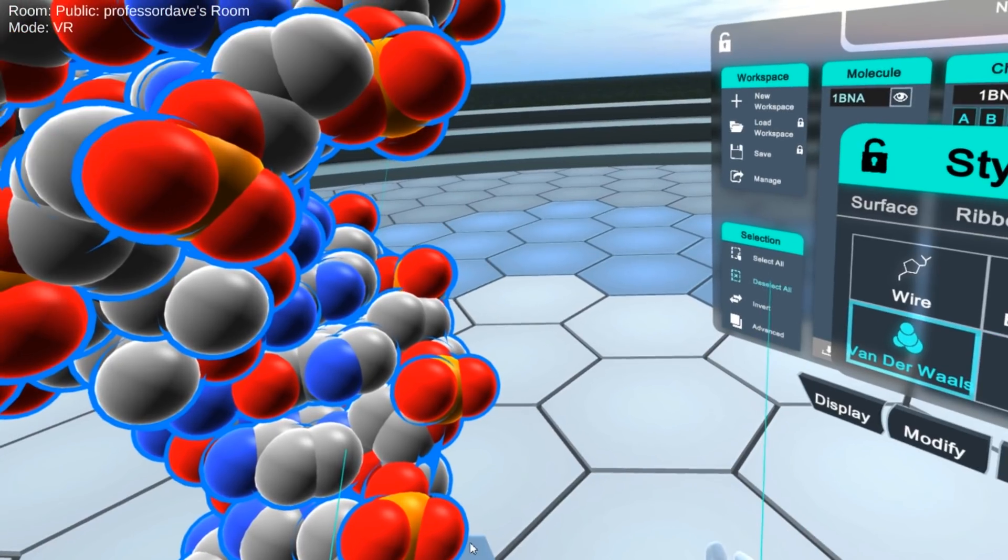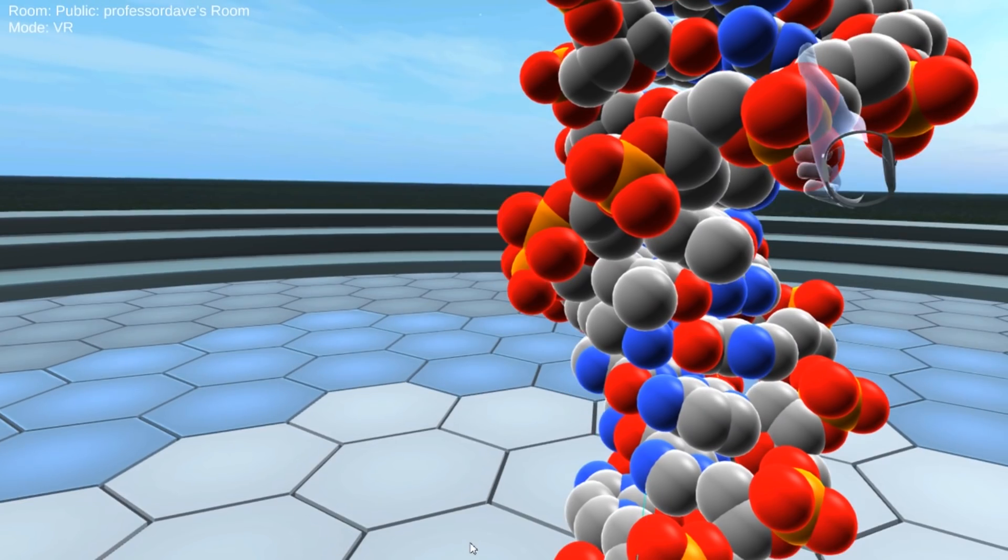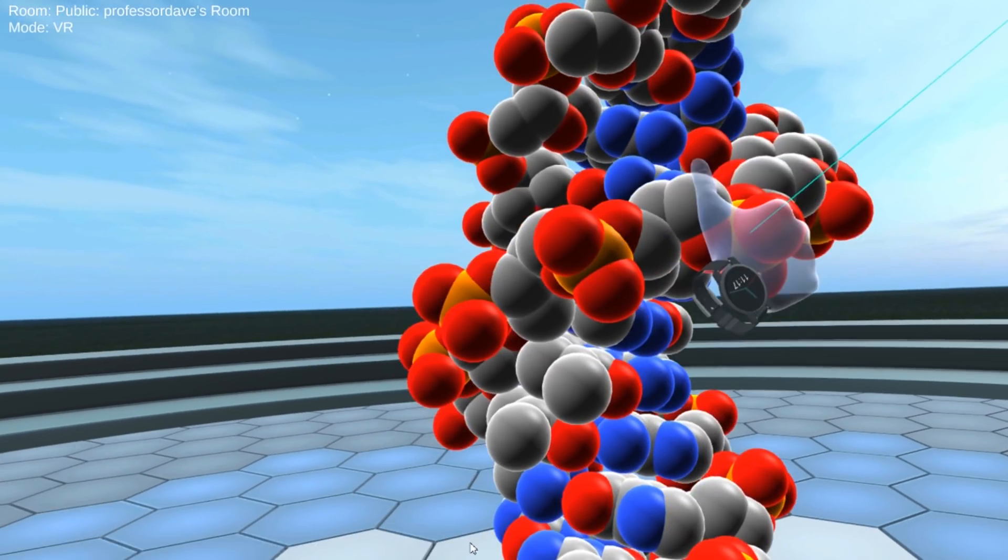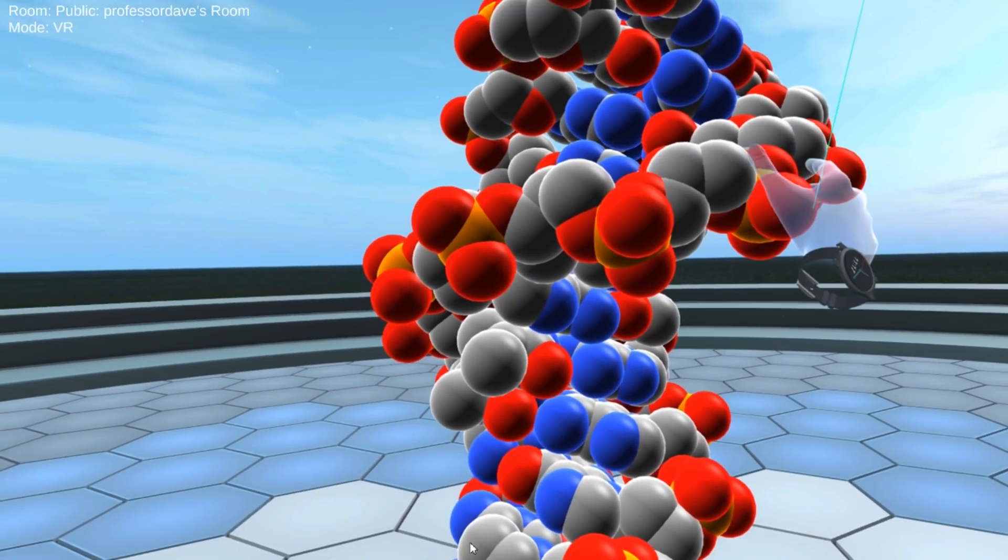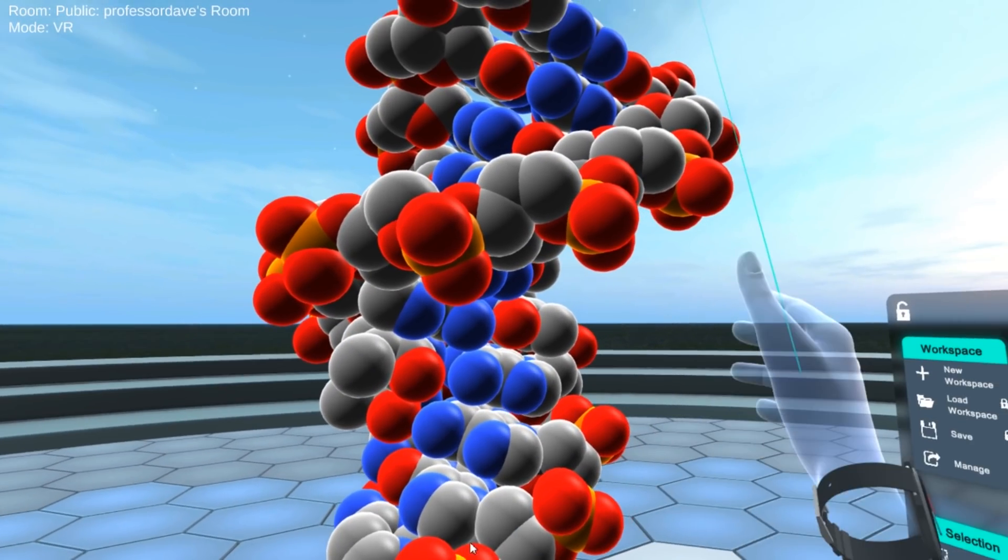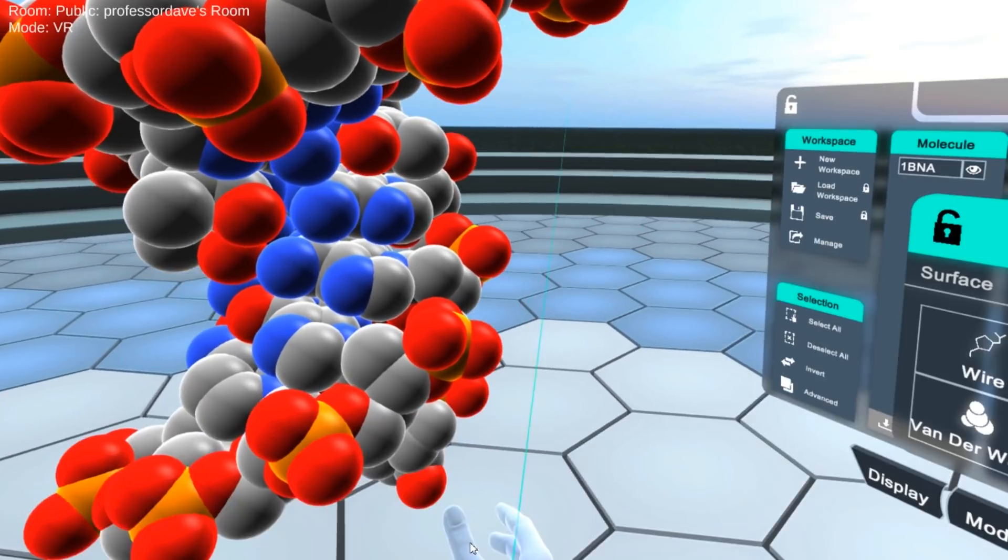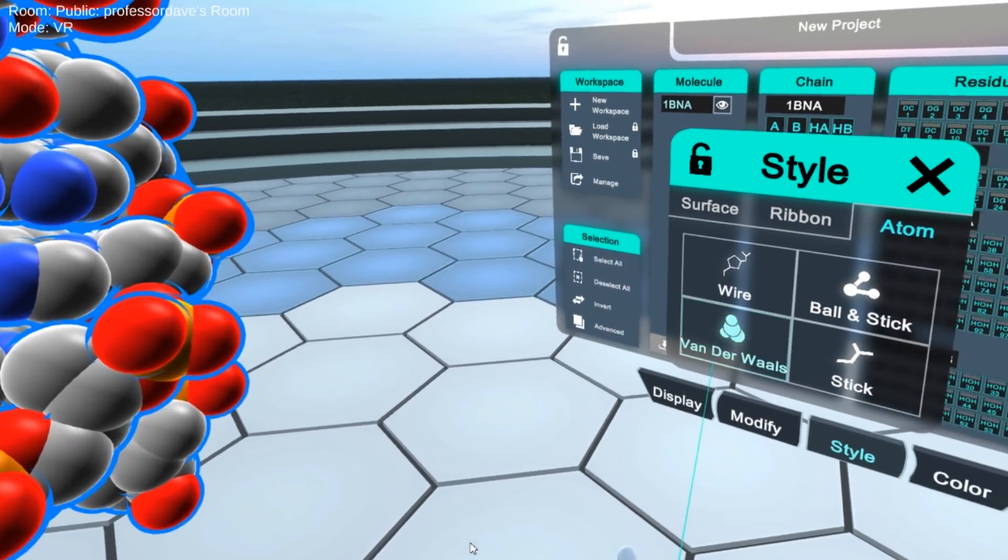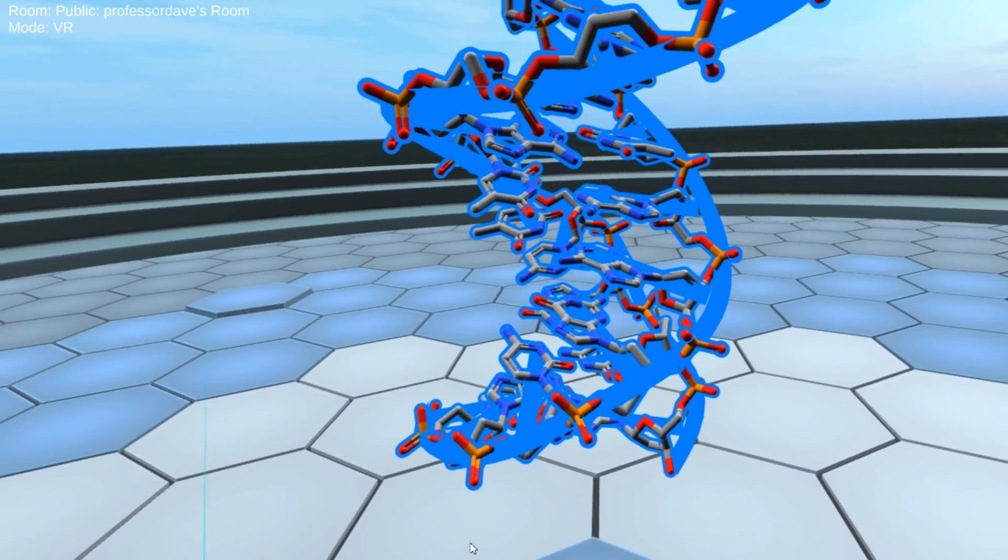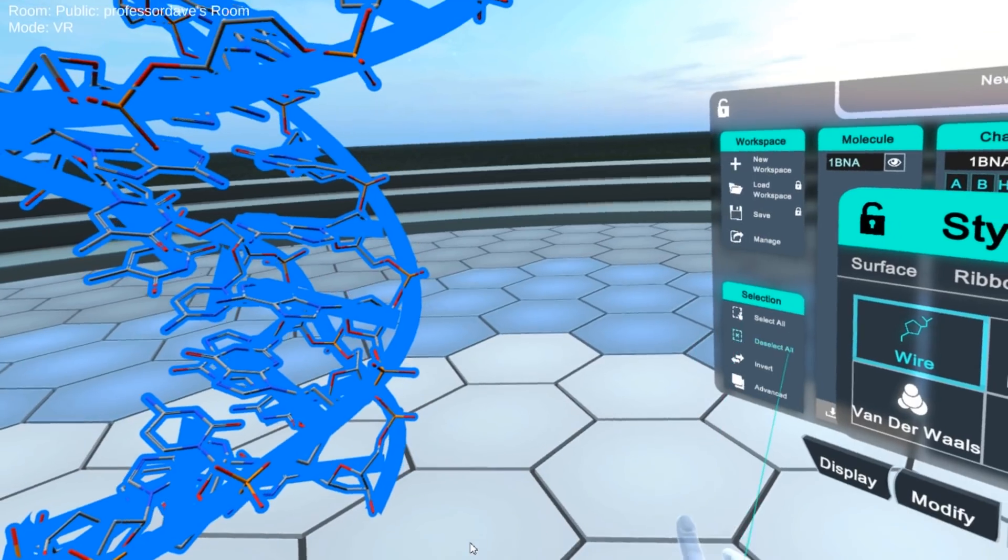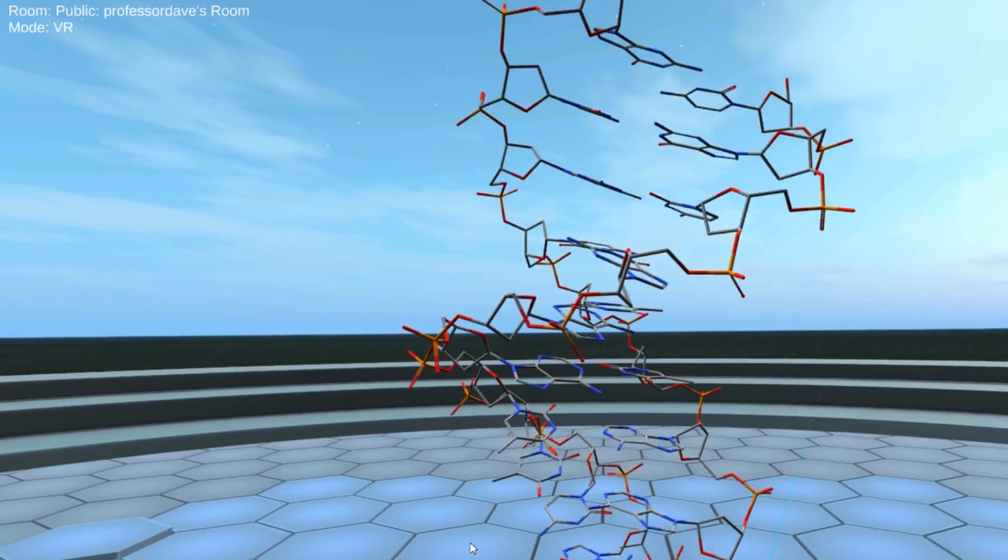And we can look at this in a few different ways. We can use Van der Waal's view. And here we can very clearly see the phosphate backbone with this space filling model, and that's wrapped around the side. And then we've got these base pairs in the middle with all those blue nitrogen atoms. And we can look at this in a stick view as well or a wire view. And these are just different ways of representing the molecule, all of which are useful in their own ways.